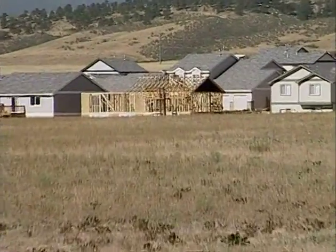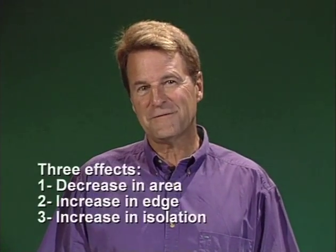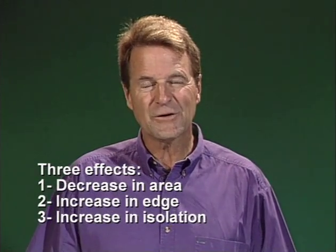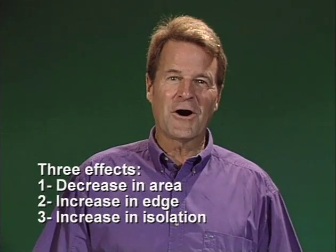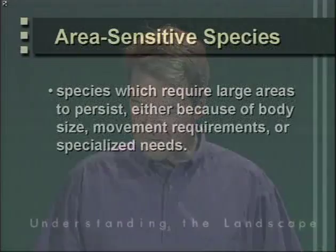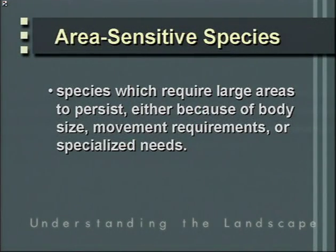Habitat fragmentation is probably right now the principal threat to the maintenance of biological diversity. There are three effects of fragmentation: one, a decrease in area; two, an increase in edge; and three, an increase in isolation. There are collections of species associated with each of these that are increasingly becoming of conservation concern. Let's talk about the first group — species we call area-sensitive species.